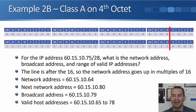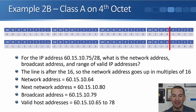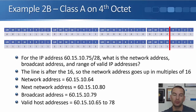For this example, the line is after the 16 when we draw it out, so the network address is going to go up in multiples of 16. Looking at the last octet of the address, I've got a 1 under the 64 and that's all. So the network address is 60.15.10.64. Adding 16 to that, the next network address will be 60.15.10.80. So our broadcast address must be 60.15.10.79, and the range of valid host addresses is 60.15.10.65 up to 78.